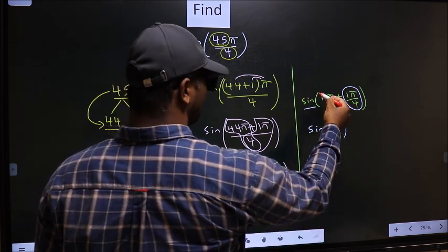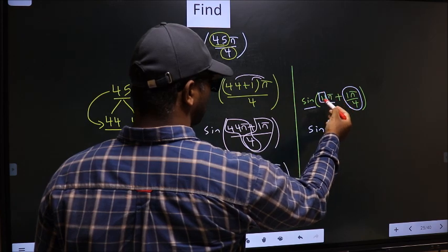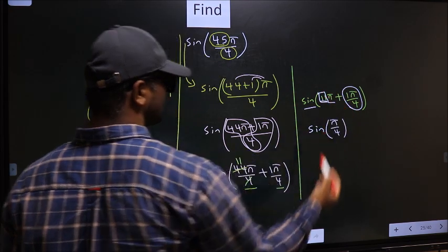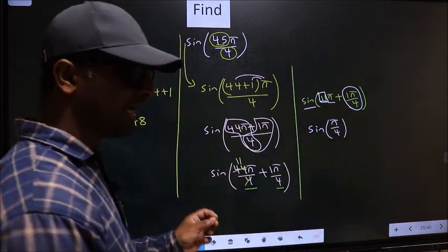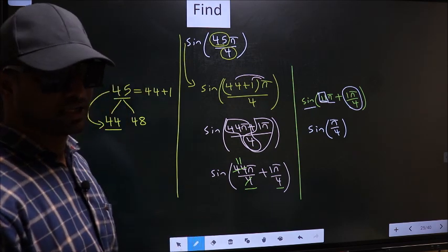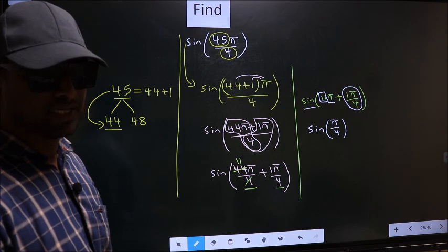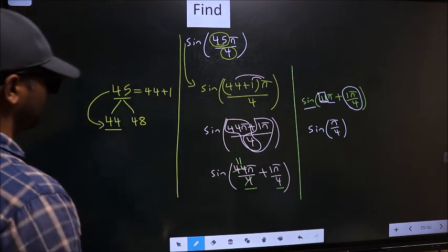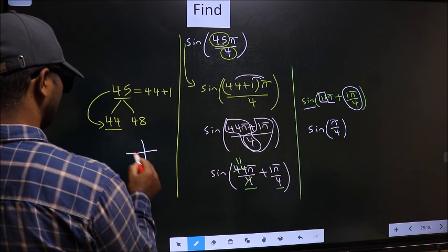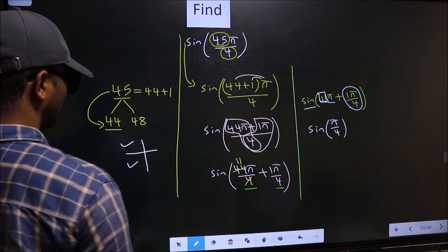To answer that, you look at this number before π, which is 11. And 11 is odd. And all the odd multiples of π, they lie in the second or in the third quadrant.